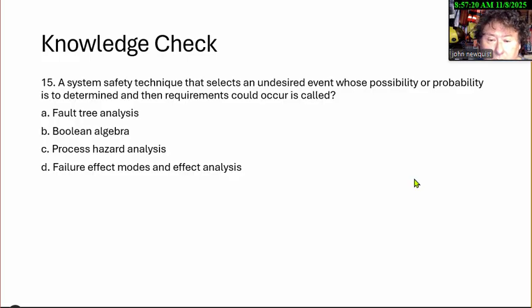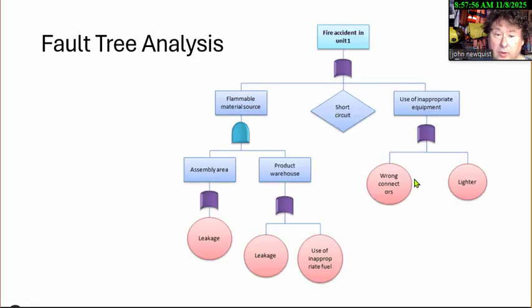The system safety technique that selects an undesired event whose possibility or probability is determined and then requirements could occur is called. I don't like the question. The question is kind of disturbing right there, but I try to paraphrase a test question that was on the exam. Is it going to be fault tree analysis, Boolean algebra, process hazard analysis, or failure effects mode and effect analysis? So you're going to get an event and you want to figure out what were the issues that could happen pre-event.